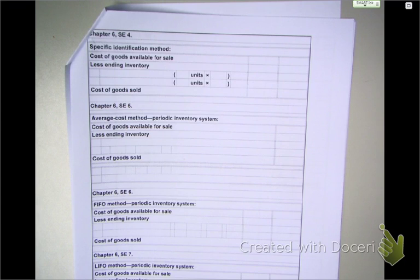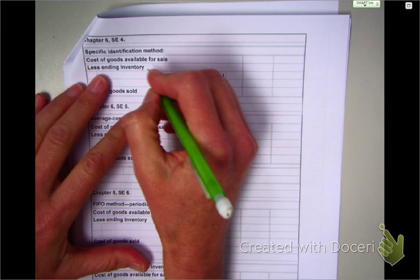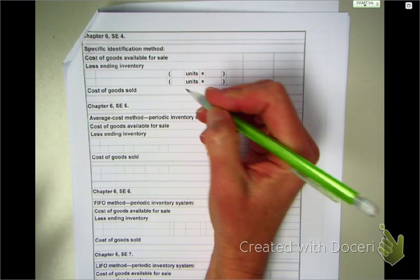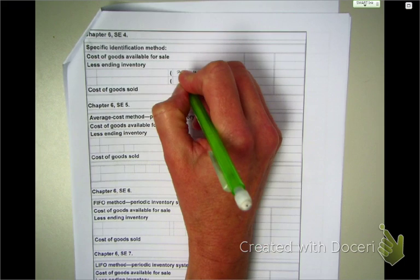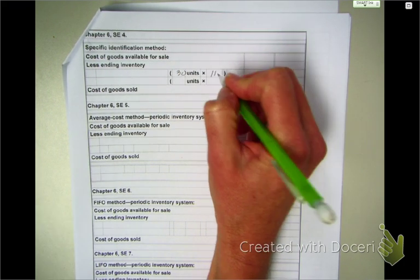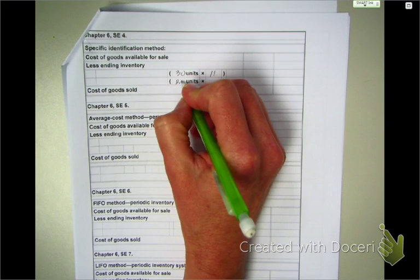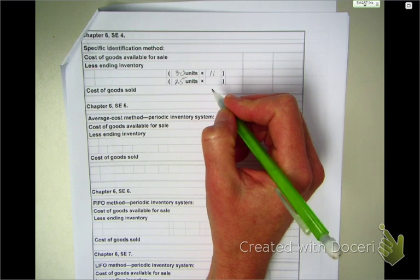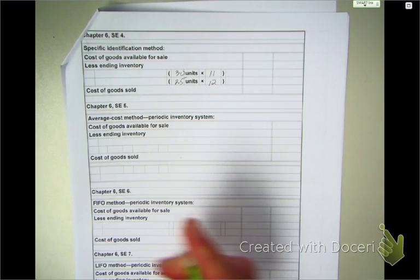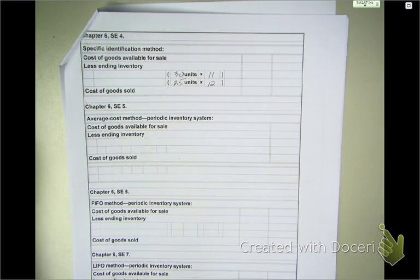First transaction we're going to do is a specific identification. In the specific identification, they're telling you exactly what units you sold from what dates. We sold 30 units from the August 8th purchase at $11 per unit. Inventory consists of 30 units from the August 8th purchase at $11 per unit, and 25 units from the August 22nd purchase at $12.